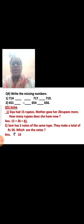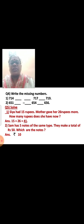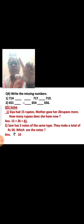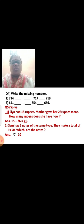Sam has 5 notes of the same type. They make a total of rupees 50. Which are the notes? Rupees 10. See, rupees 10 taken 5 times: 10, 10, 10, 10, 10 — that is 10, 20, 30, 40, 50. So rupees 10 note.